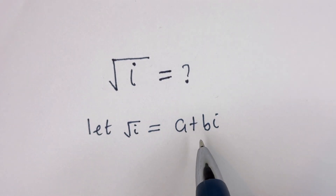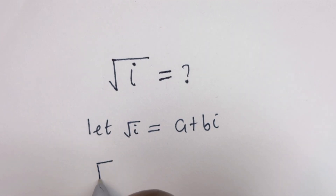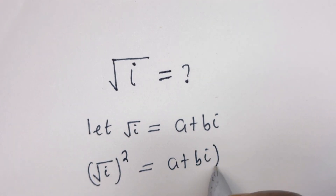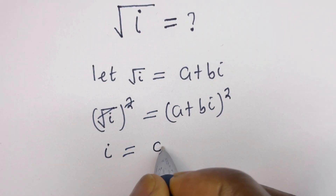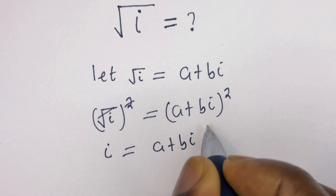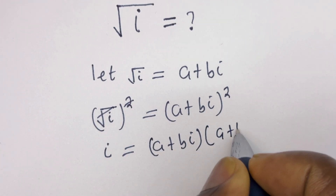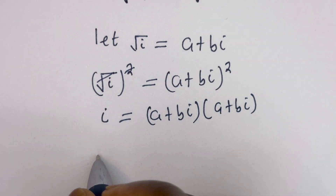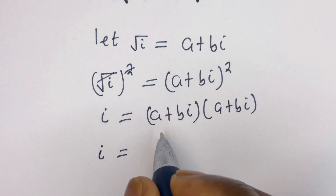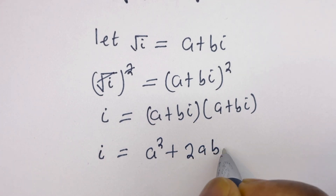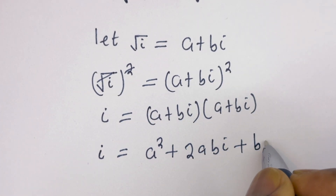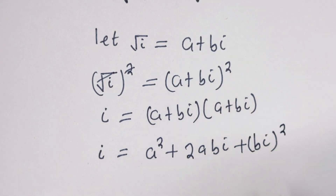This is in complex form. Then we can square both sides of this equation. Square root of i, all squared, is equal to a plus bi, all squared. So i is equal to a plus bi multiplied by a plus bi, which gives us a squared plus 2abi plus bi all squared.